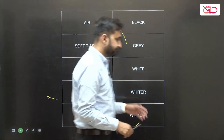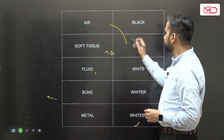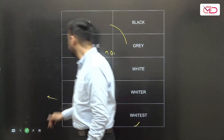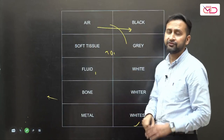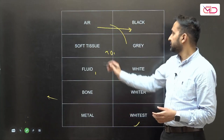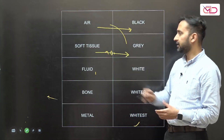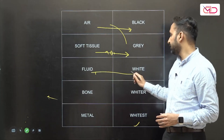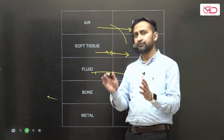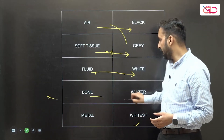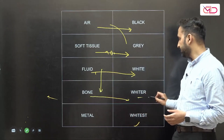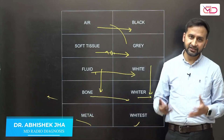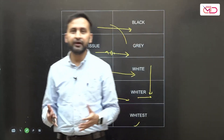To summarize: air appears black because it does not produce any hindrance to the movement of X-rays. Soft tissues appear gray because they produce some attenuation or reduction to the movement of X-rays. Fluid appears white, as we saw in the X-ray of the half-filled bottle. Bone is harder and denser than fluid, so it appears whiter than fluid. And finally, metal absorbs all the X-rays — it won't allow any X-rays to pass through — so it appears the whitest.